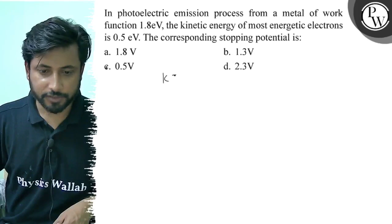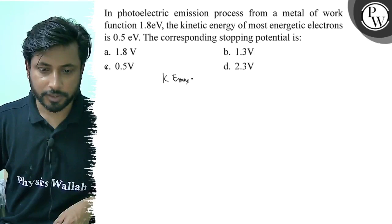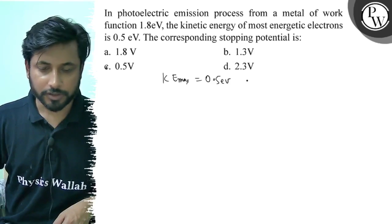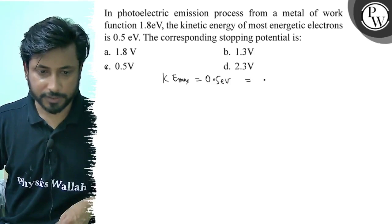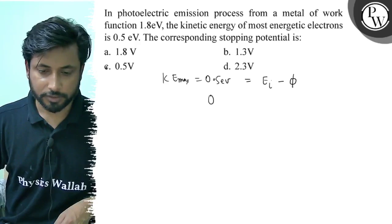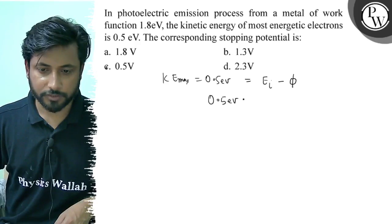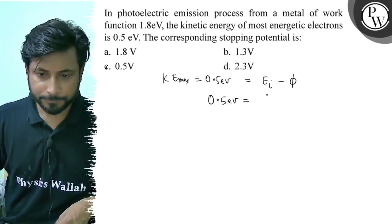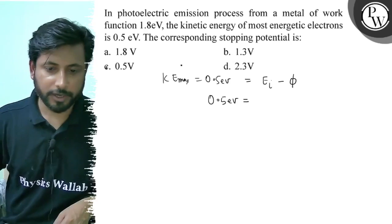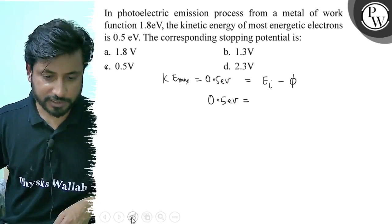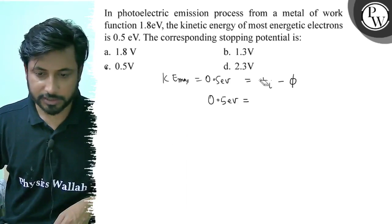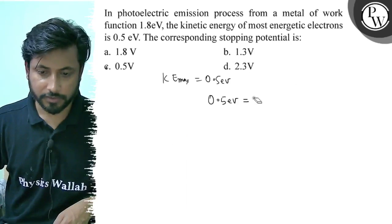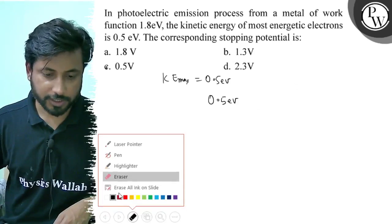Kinetic energy K_max value is 0.5 electron volt. And the stopping potential can be found directly from the kinetic energy K_max.